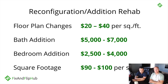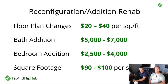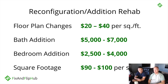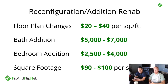For the big reconfiguration projects, a floor plan change runs $20 to $40 per square foot. Adding a bath could be $5,000 to $7,000, a bedroom addition $2,500 to $4,000, and adding square footage costs roughly $90 to $100 per square foot.